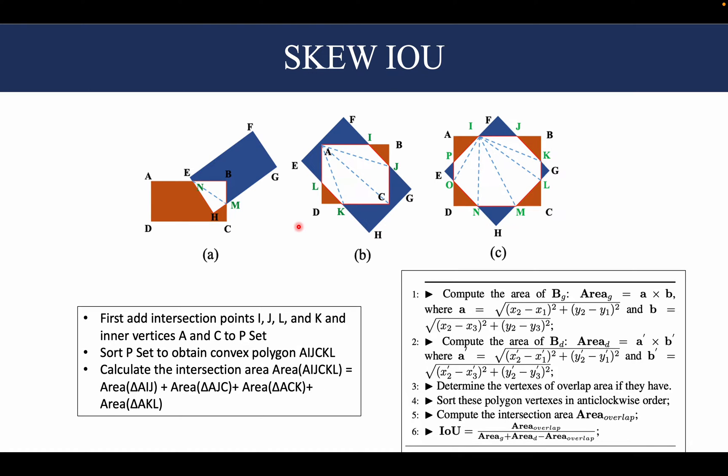For rotated bounding boxes, the IOU is called SKEW IOU, and there are a number of permutations and combinations in which two rotated bounding boxes can overlap. The three illustrated here are just a few of the many examples.